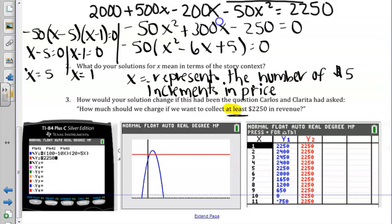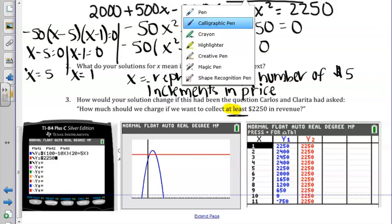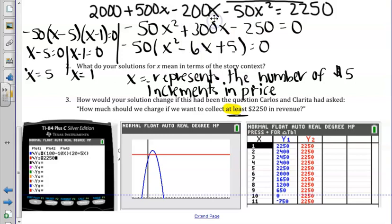So we have to remember what at least means. At least means they want to make $2,250 or more. So now instead of an equal sign, our equation becomes an inequality.